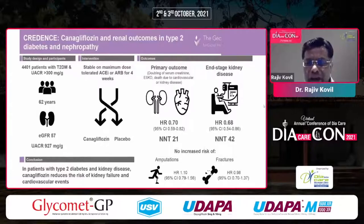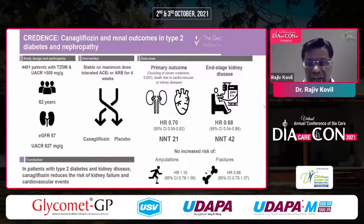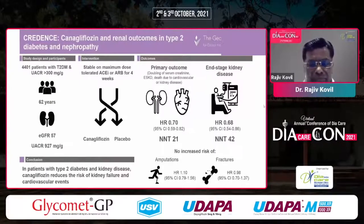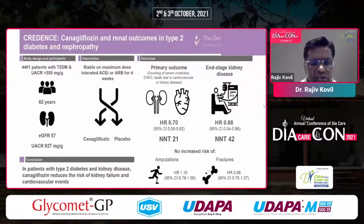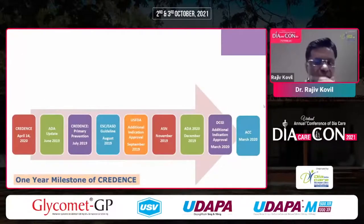Looking at only the renal outcome in terms of the harder endpoint of end-stage kidney disease, there was a 32% reduction. The number needed to treat for the primary outcome was 21, which is very significant, and for the renal hard endpoint it was 42. No increased features of amputation or fractures were found. So canagliflozin reduces the risk of kidney failure and cardiovascular events in patients with type 2 diabetes and kidney disease.